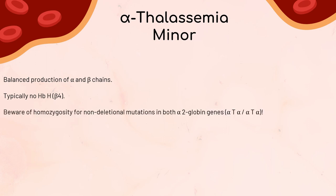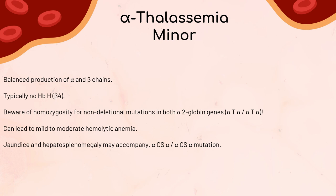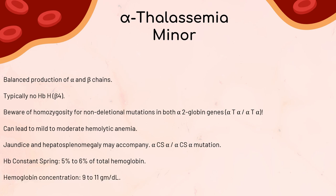Beware of homozygosity for non-deletional mutations in both alpha-2 globin genes (alpha-T-alpha / alpha-T-alpha). This can lead to mild to moderate hemolytic anemia, often accompanied by jaundice and hepatosplenomegaly. In individuals with the homozygous mutation alpha-CS-alpha / alpha-CS-alpha, hemoglobin constant spring makes up around 5% to 6% of total hemoglobin, and hemoglobin concentration is usually between 9 to 11 g/dL.